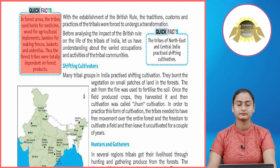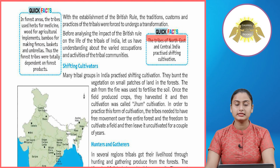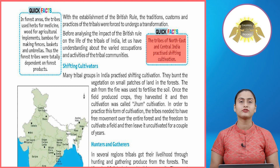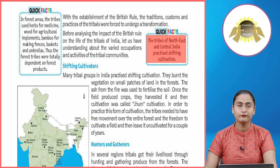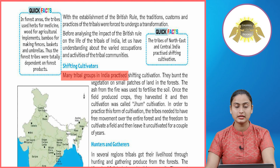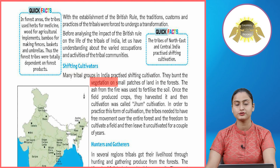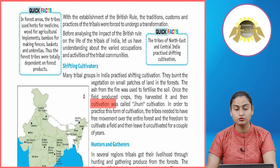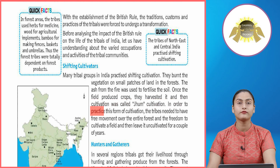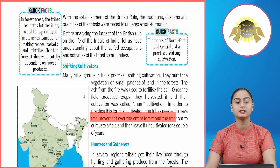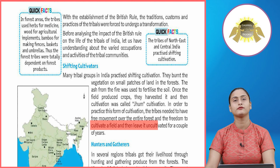Quick facts: the tribes of north-east and central India practiced shifting cultivation. The shifting cultivators — many tribal groups in India — burnt the vegetation on small patches of land in the forests. The ash from the fire was used to fertilize the soil. Once the fields produced crops, they harvested it. This was called jhoom cultivation. To practice this form of cultivation, tribes needed free movement over the entire forest and the freedom to leave a field uncultivated for a couple of years.